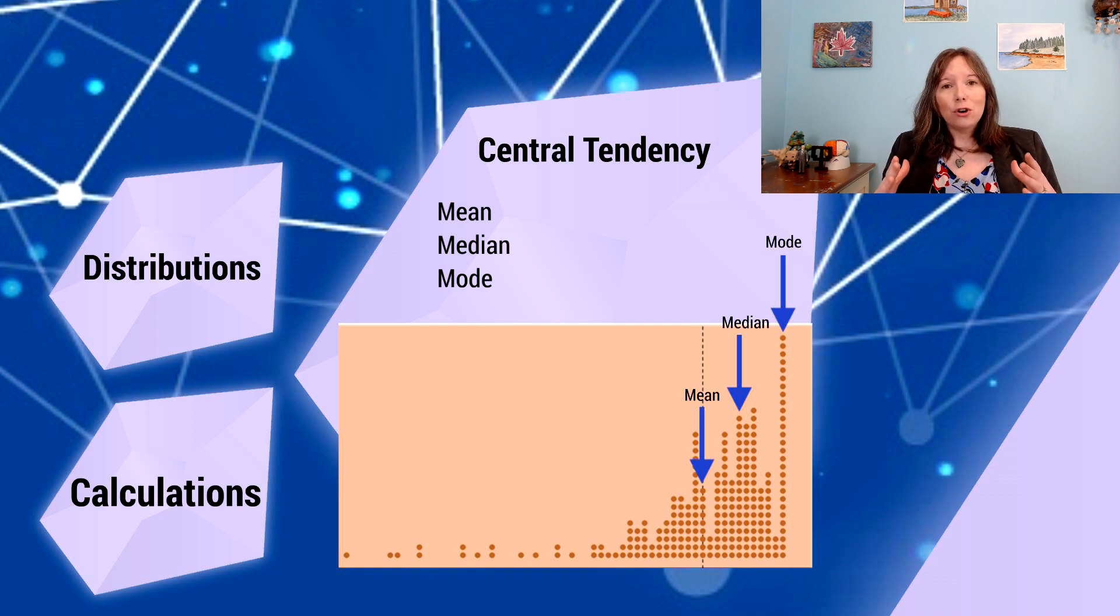The mode is the most common or prevalent score. So what is the most frequent score? And so this is the most popular score. And again, in a curve that we would call normal, our mean, median, and mode are identical. But in the curve I have here, for example, they're not.